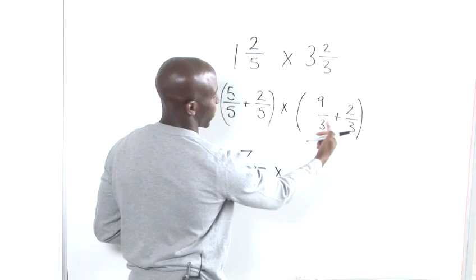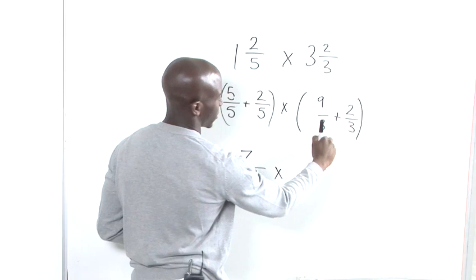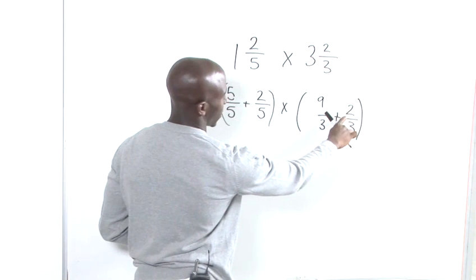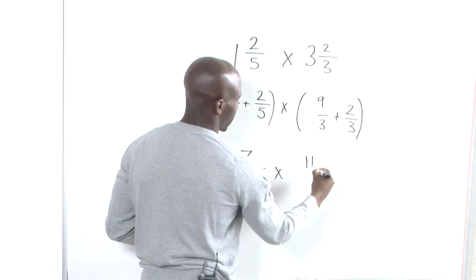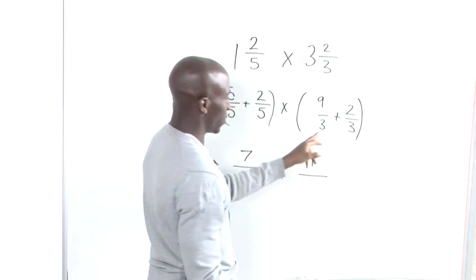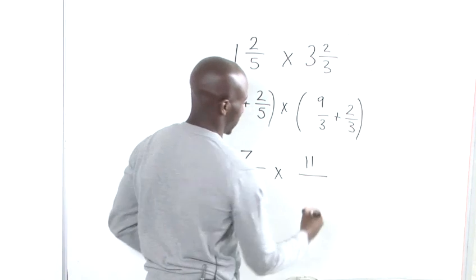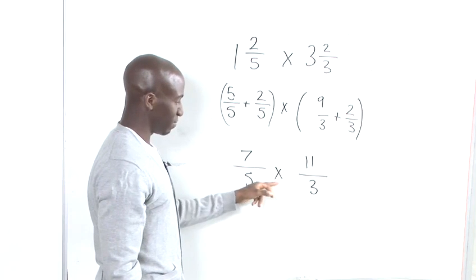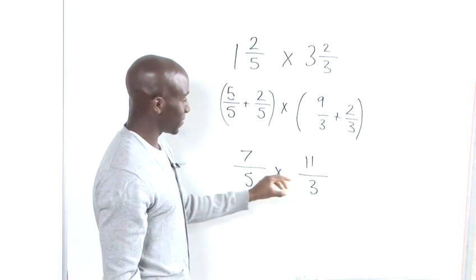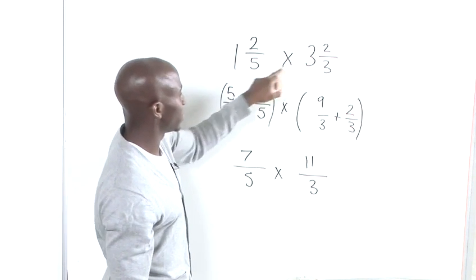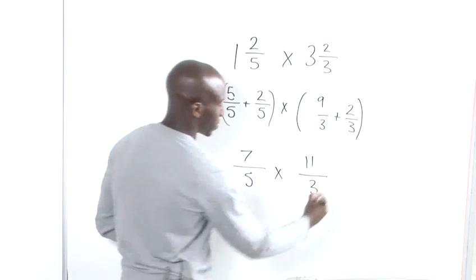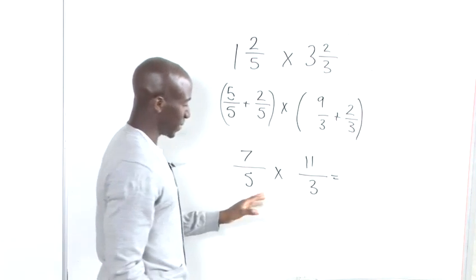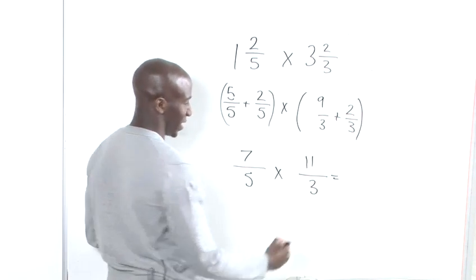And again, we're going to do that with these two fractions. So we've got 9 plus 2, which is 11. And then we write the denominator. So we've got 7 fifths multiplied by 11 thirds. Now that is pretty much what these two equate to. So the multiplication now is a lot more easier.